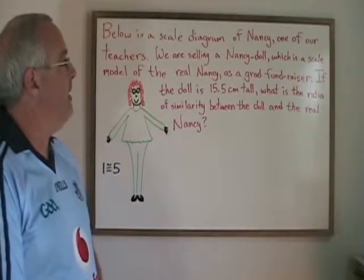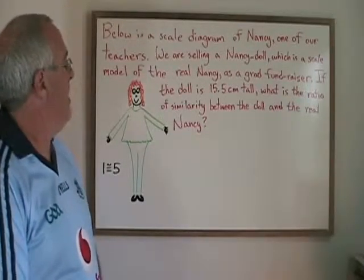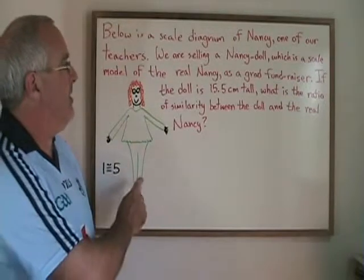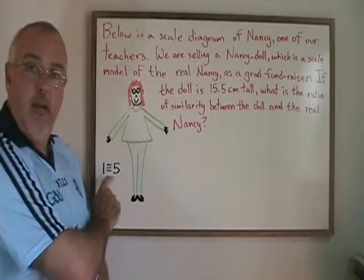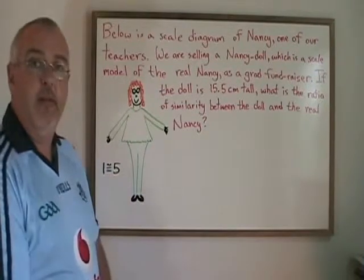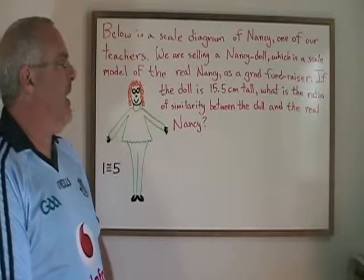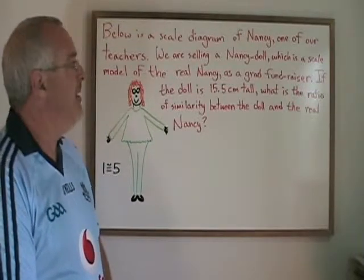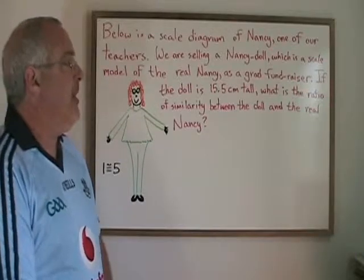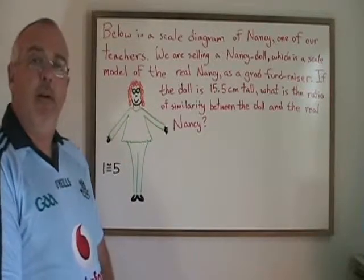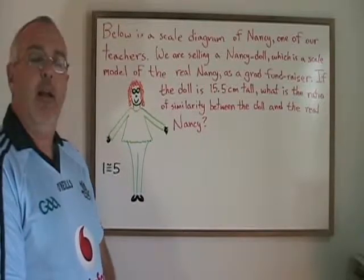Here is another problem that I'd like to call a two-step proportion. Below is a scale diagram of Nancy, one of our teachers, and we can see that this diagram has a 1 to 5 scale. We are selling a Nancy doll, which is a scale model of the real Nancy, as a grad fundraiser. If the doll is 15.5 centimeters tall, what is the ratio of similarity between the doll and the real Nancy?